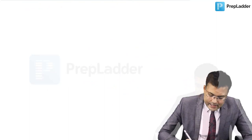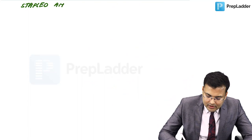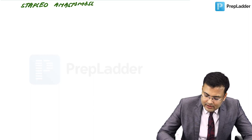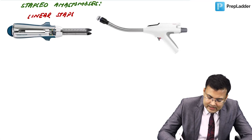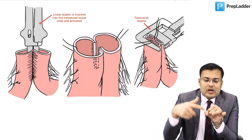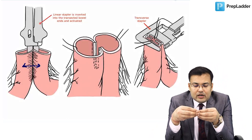The linear stapler creates side-to-side anastomosis, with open ends closed by a transverse stapler. The circular stapler is used for end-to-end anastomosis — specifically for colorectal and coloanal anastomosis in low anterior resection, and also in stapled hemorrhoidopexy.